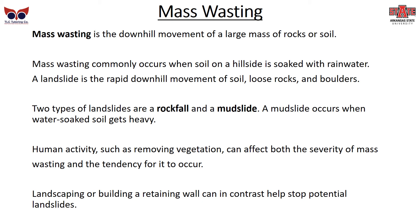Mass wasting is the downhill movement of a large mass of rocks or soil, and commonly occurs when soil on a hillside is soaked with rainwater. A landslide is usually described as a rapid downhill movement of soil, loose rock, and boulders. The two major types are a rockfall and a mudslide — a mudslide is when water-soaked soil gets very heavy and starts to slide. Human activity, such as removing vegetation, can affect both the severity of mass wasting and the tendency for it to occur. However, landscaping and retaining walls can help stop potential landslides.